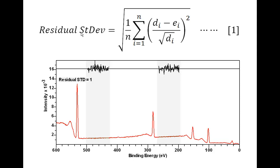Ultimately, the residual standard deviation is close to unity for pulse counted data because we know the uncertainty in each data bin obeys Poisson statistics and we can factor that out of each calculation for how closely a curve fits data. What we are doing is normalizing against changes in intensity.